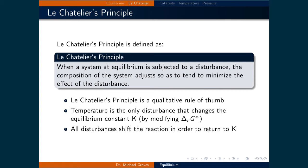Before we can move on with the discussion regarding the Haber-Bosch process, we will need to define Le Chatelier's principle. It is defined as: when a system at equilibrium is subjected to a disturbance, the composition of the system adjusts so as to tend to minimize the effect of the disturbance. This is a qualitative rule of thumb where a disturbance causes the reaction to shift in order to return to the equilibrium constant K.